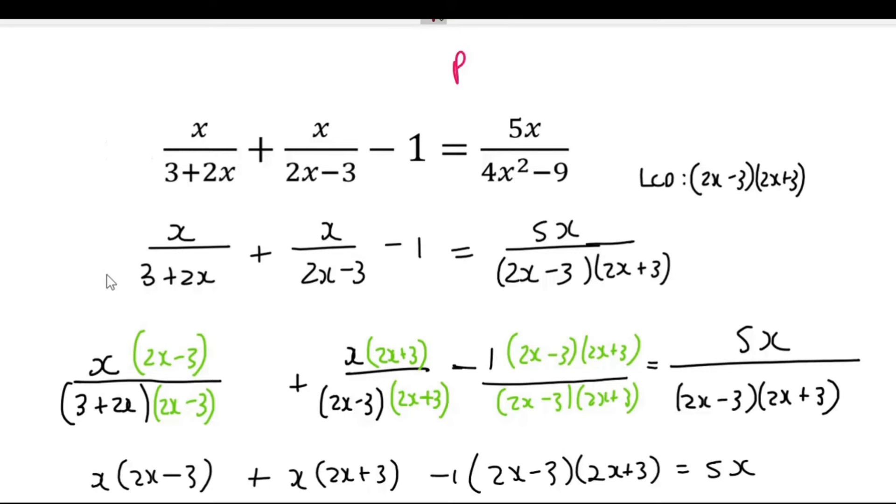So the restrictions that we should have had here was that 3 plus 2x should not equal 0. And also 2x minus 3 must not equal 0. I don't have to worry about this one because that one is actually this over here. And we are already taking care of it with these two.